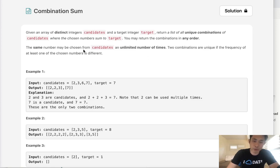The same number may be chosen from candidates an unlimited number of times. Two combinations are unique if the frequency of at least one of the chosen numbers is different. So 2-2-3 is the same as 2-3-2. That makes sense.